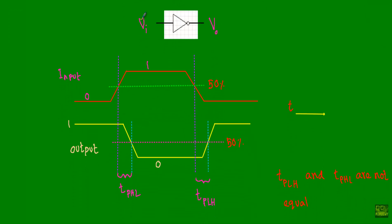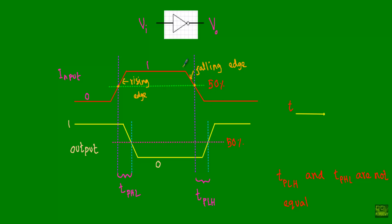Let's say this is our inverter gate. At the input we are applying VI, which is a time-varying signal. From this point to this point, our input is changing from logic 0 to logic 1 — this edge is known as the rising edge. From this point to this point, our input is changing from logic 1 to logic 0 — this edge is known as the falling edge. The 50% level of the rising edge and the 50% level of the falling edge are marked as reference points.